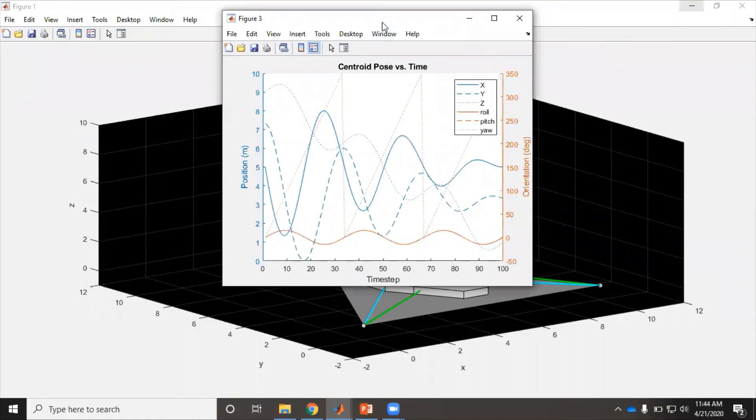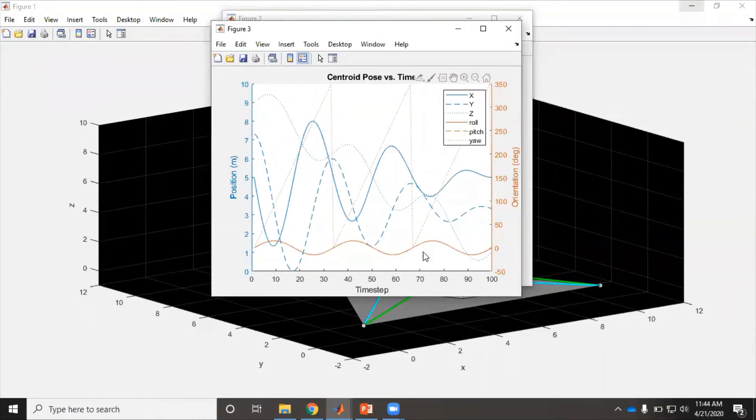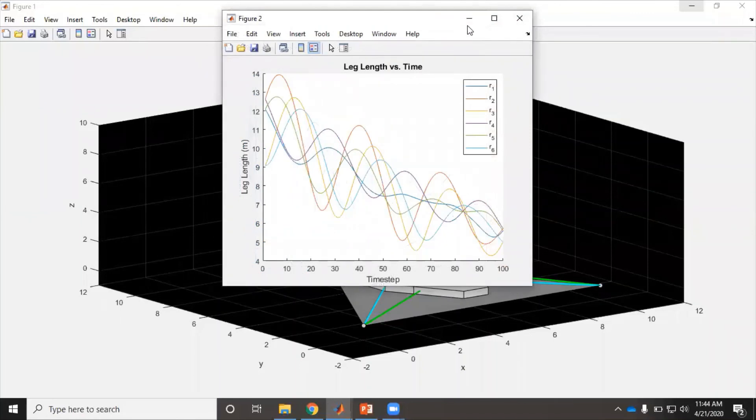So here we can look at centroid pose versus time. So orientation, roll, and then pitch was actually the same as roll for this particular one. And then yaw. So then x, y, and z all plotted. And then the leg length versus time, you can see they pretty much follow like a similar sinusoidal pattern.